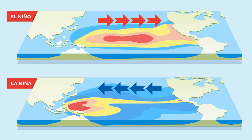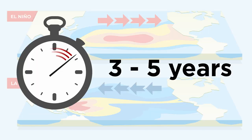In a La Niña year, colder than usual water appears off the west coast of South America instead, also affecting global temperature and precipitation patterns. This cycle repeats itself on a timescale of about five years, and while the changes are short-term, they have the ability to hinder human food production and availability internationally.